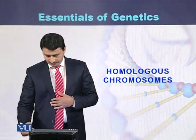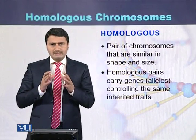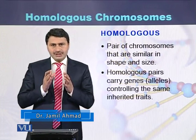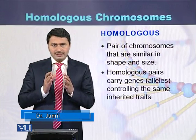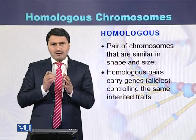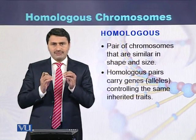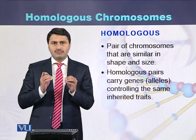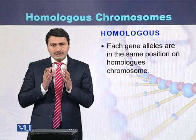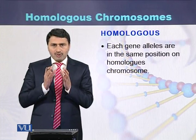Homologous chromosomes are pairs of chromosomes which are similar in size and shape. Genes are present on the chromosomes, and each gene consists of two alleles. One allele of a gene is present on one homolog, while the second allele of that gene is present on the second homolog. The alleles of a gene are present at the same position on the homologous chromosomes.